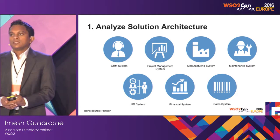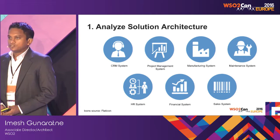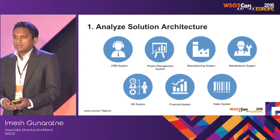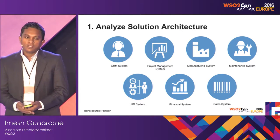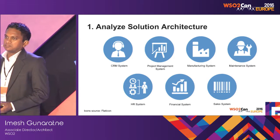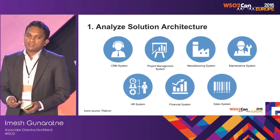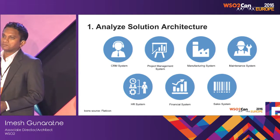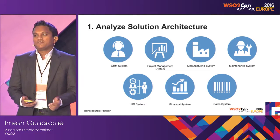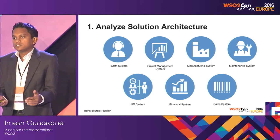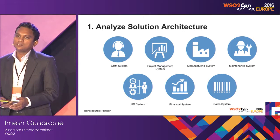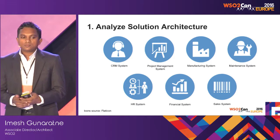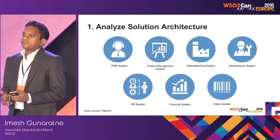First, we need to analyze our solution architecture. In this example, I have taken a sample car manufacturer which uses seven different systems, starting with CRM, project management, manufacturing, maintenance, and so on. At the first phase, we need to go through our solution architecture, identify the different systems we use, how they talk to each other, and the complexity of each system.